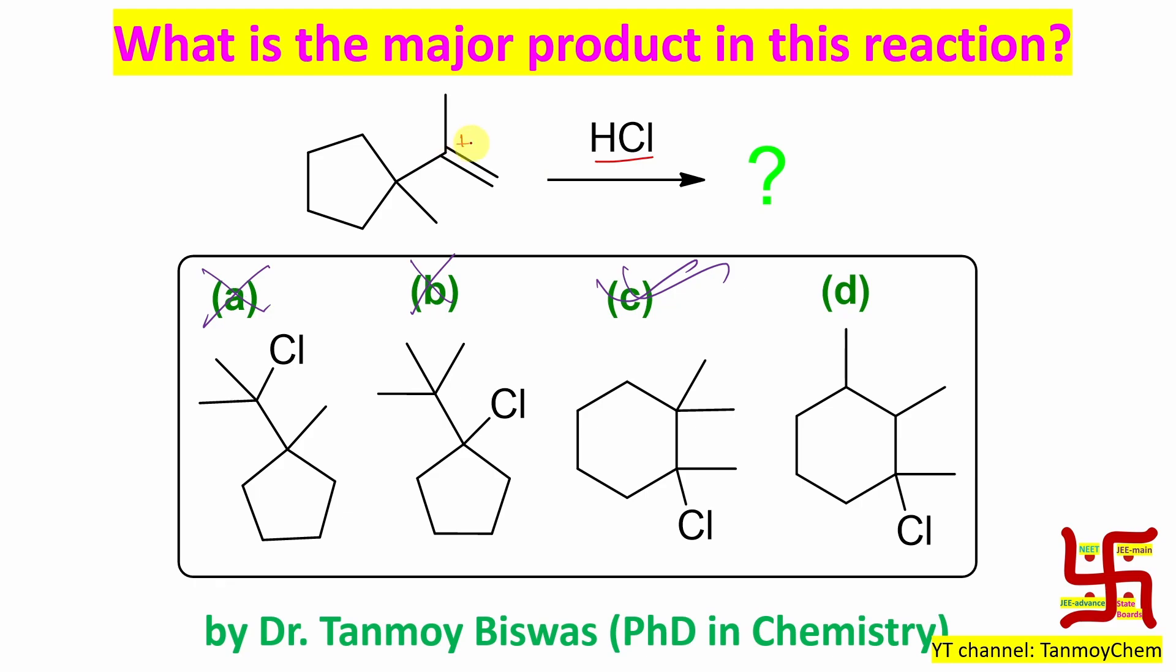First you need to understand: alkene plus HCl addition reaction, carbocation will be here. Second point, there will be a migration. So if migration takes place, then positive charge will be here - one side methyl, one side the six-member ring.